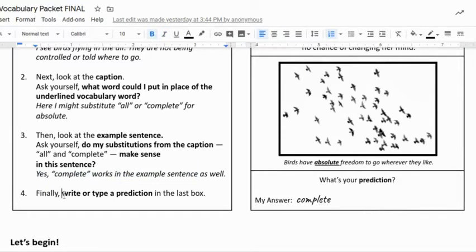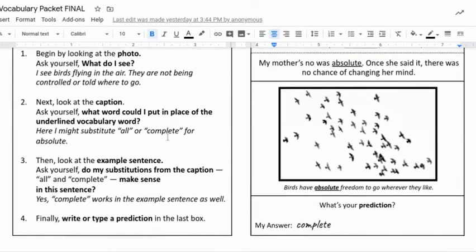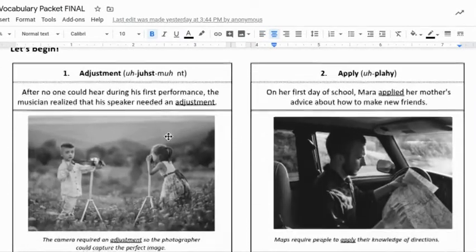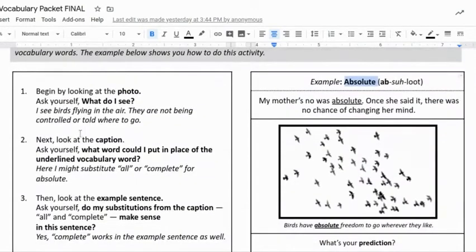And finally, write or type—you're going to be typing a prediction in the last box. The answer is 'complete' of the prediction for the definition of absolute. Okay, that is the first activity. You'll do that for each one. The process—here are the questions you ask yourself.